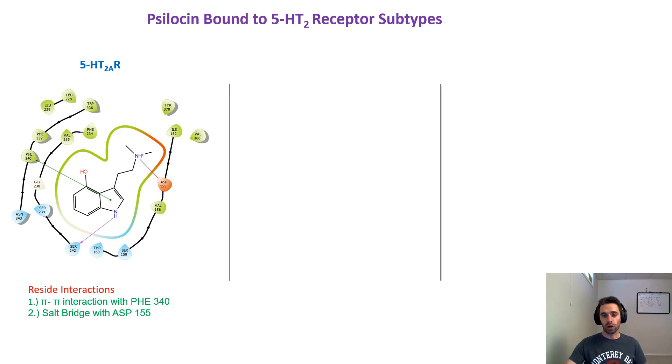This is a well-documented interaction that the Nichols paper about serotonin 2A crystal structure shows when they bind LSD to it. Then the last interaction is the hydrogen bond with serine 242, which is also a known hydrogen bond that the Nichols paper predicts.